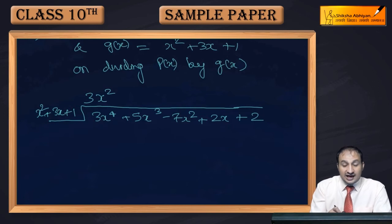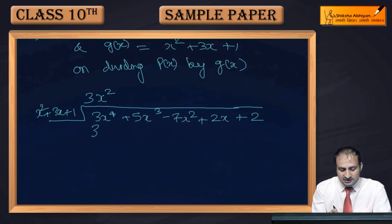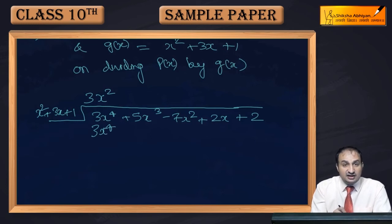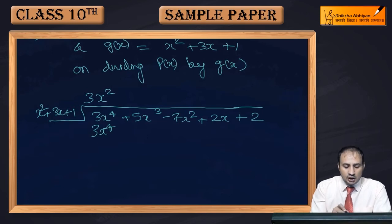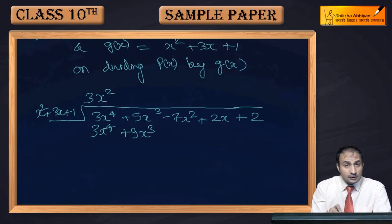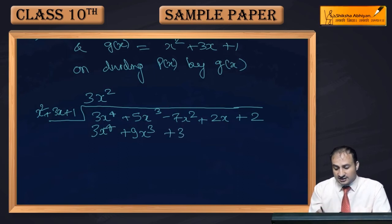So the first term of the quotient is 3x². Multiplying 3x² by x² gives 3x⁴. Then multiplying 3x² by 3x gives 9x³, and multiplying 3x² by 1 gives +3x². These are all the terms from multiplying 3x² into the divisor.